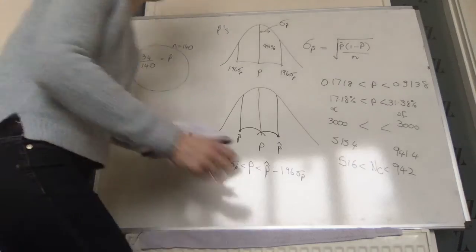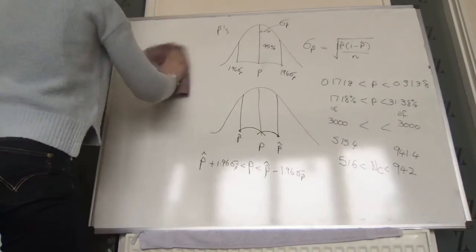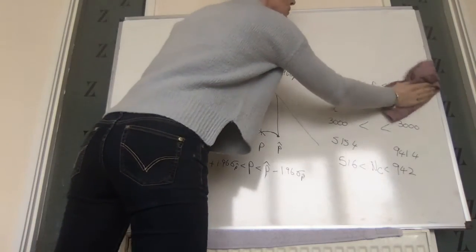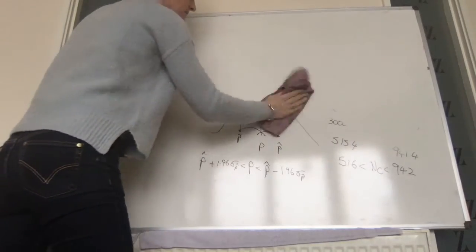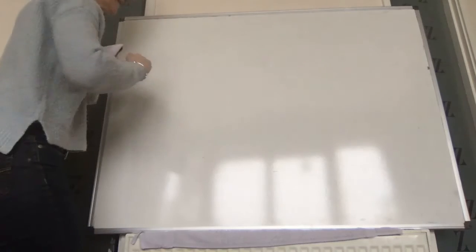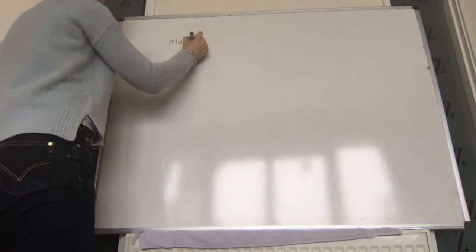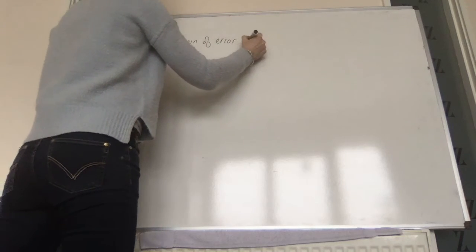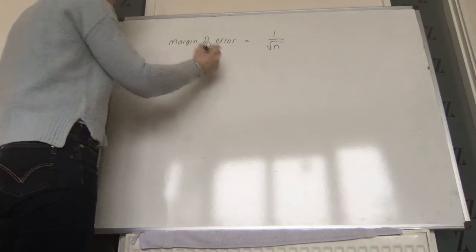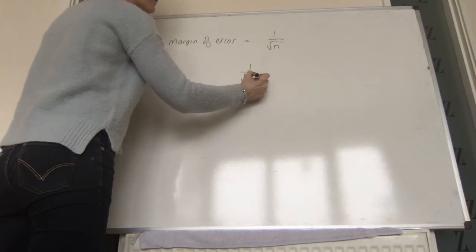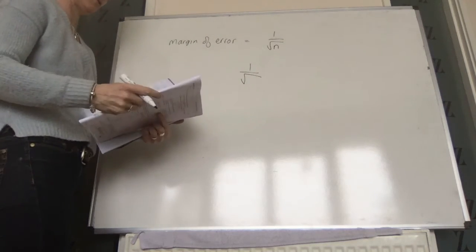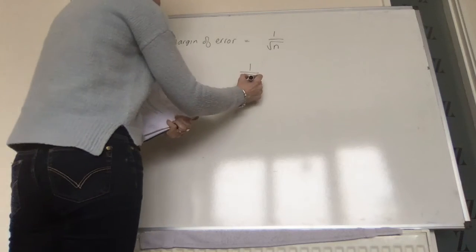The last bit of that question. The assessor wishes to half the margin of error. So what new n would he need to half the margin of error? Now if you remember, the margin of error is 1 over root n. So our original margin of error is 1 over the square root of 140. So when we use a sample size of 140, our margin of error is this.